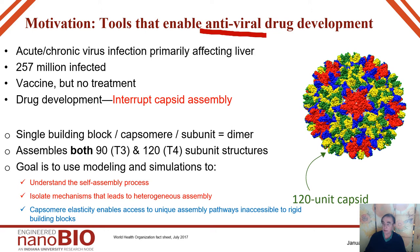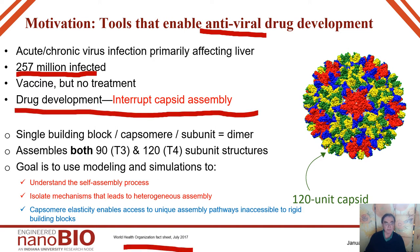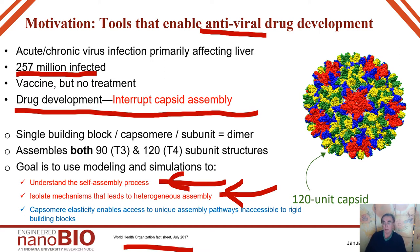We want to conquer nature's nanoparticles — the viruses — and enable drug development. Here is an example of virus infection in the liver: 257 million infected, according to a World Health Organization fact sheet. Drugs are being developed which interrupt the assembly. You need to assemble 90 and 120 subunit structures, understand the mechanisms that lead to heterogeneous assembly, and how elasticity allows you to incorporate parts you would not otherwise be able to with a more monolithic design.